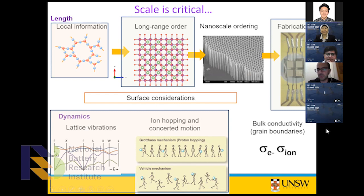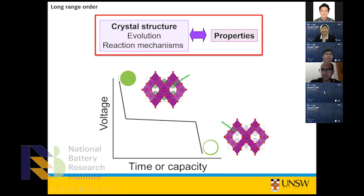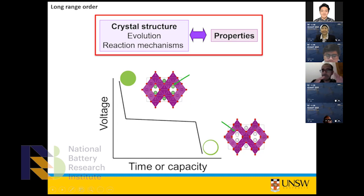Focusing on long-range order, we're looking at crystal structure, its evolution, the types of reactions occurring, and their relationship to properties. If you look at a voltage versus time graph, to have the best battery you want the highest voltage that lasts as long as possible and is as reproducible as possible. Looking at this spinel structure — here you see the lithium in green in the lithiated state, and in the delithiated state the lithium is being taken out.